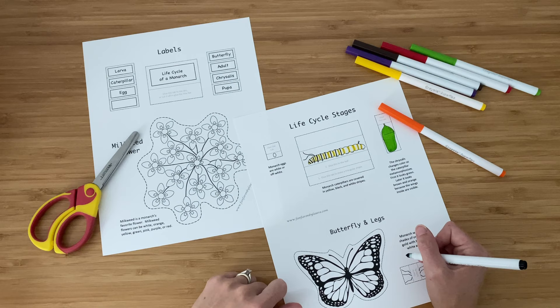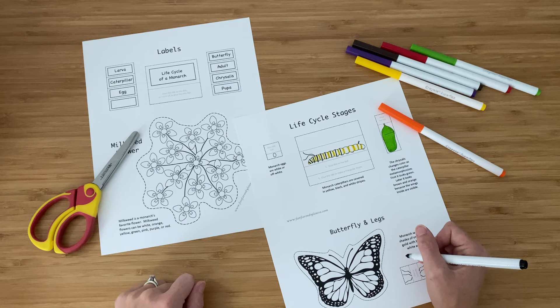And interestingly enough, their flowers can be all kinds of colors: white, orange, yellow, green, pink, purple, or red. So you can decide what you would like them to look like.